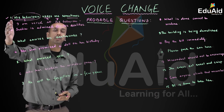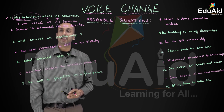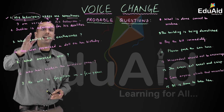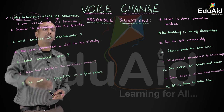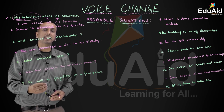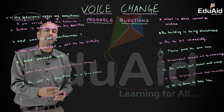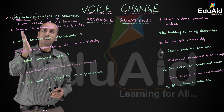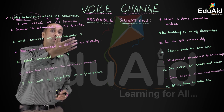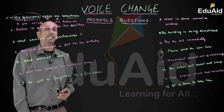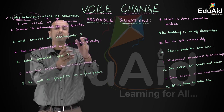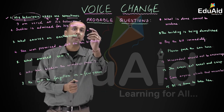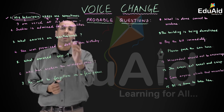That is the solution to question number one. Question number two: 'Sachin is admired for his qualities.' Looking at the sentence, 'Sachin is admired' — no doer is mentioned. The subject is the recipient, meaning this is a passive structure.